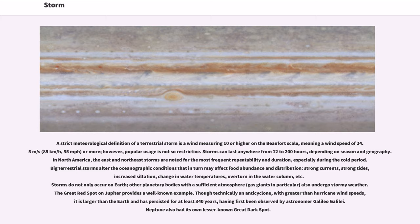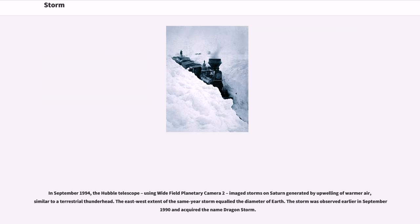Neptune also had its own lesser-known Great Dark Spot. In September 1994, the Hubble telescope, using Wide Field Planetary Camera 2, imaged storms on Saturn generated by upwelling of warmer air, similar to a terrestrial thunderhead. The east-west extent of that same year's storm equaled the diameter of Earth.